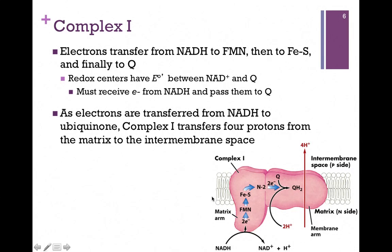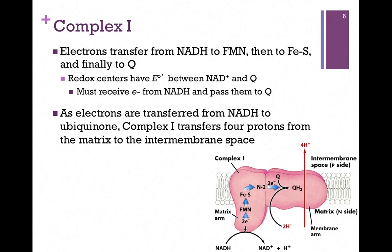As the electrons are passed, we're also going to pump some protons. For each of these steps, as we pass those electrons along, each redox center must have a higher reduction potential than the one that's transferring those electrons.